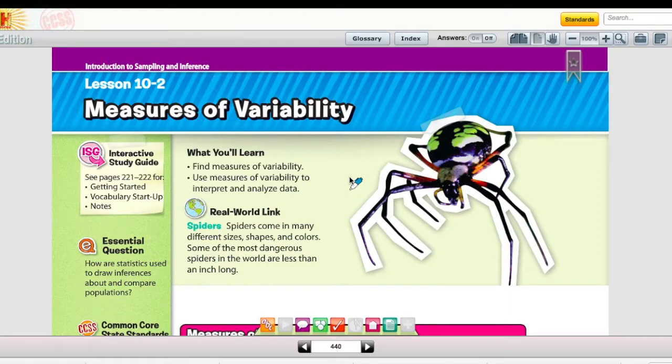In Lesson 10-2, you're going to be learning about the measures of variability, and you'll be able to find the measures of variability and use those measures to interpret and analyze data. The essential question for Chapter 10 is, how are statistics used to draw inferences about and compare populations?